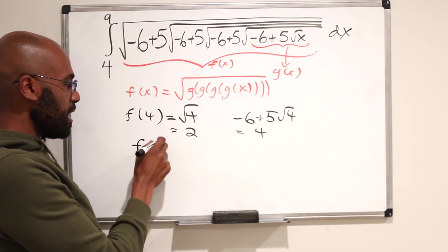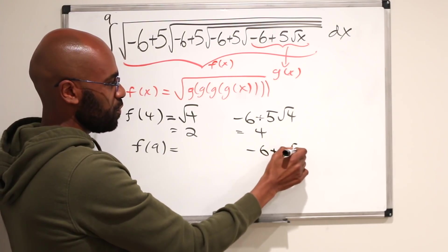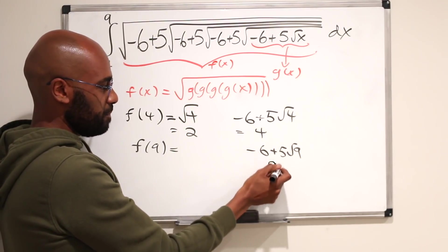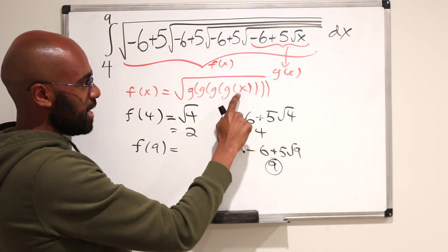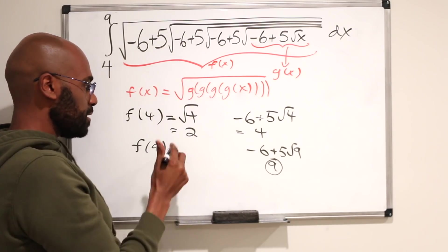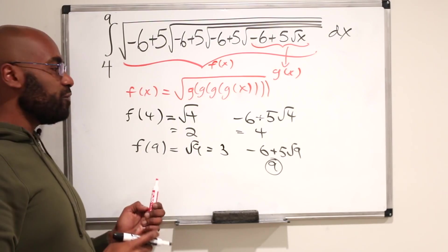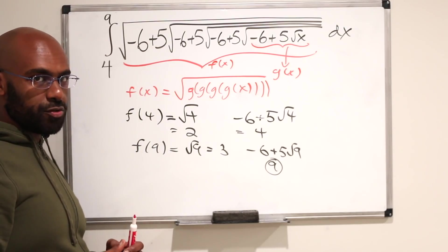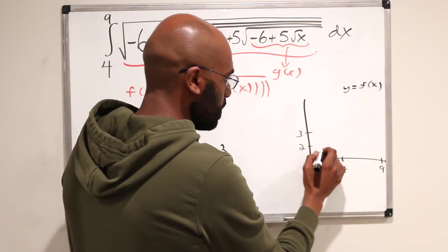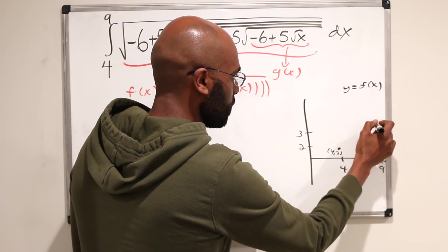In a similar light, f of 9: if we plug 9 into g of x, we get negative 6 plus 5 times the square root of 9. The square root of 9 is 3, so this is 15 minus 6, which is 9. Because g of 9 is 9, applying g into this function repeatedly gives us 9, and we end up with the square root of 9 as the value of f of 9, which is 3. So we have two values of the function at the bounds of this integral, giving us the points (4, 2) and (9, 3) on the graph of y equals f of x.